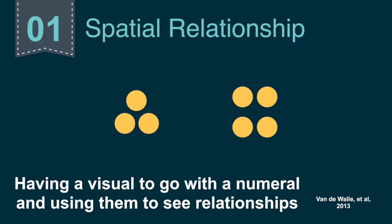The first relationship, spatial relationships, is having a visual of a numeral that goes along with that numeral, and using those visuals to help kids see relationships. In the early grades, if you just have the digits three and four, it's hard to talk about which is more, which is less, how many more or less. But when kids have these visuals, the spatial image can come up and we can have much deeper conversations about how quantities relate to each other.